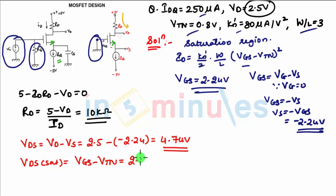Now we can find VDS sat. VDS sat is VGS minus VTN. VGS is 2.24 and VTN is 0.8, that is 1.44 volts. From these two equations, your VDS is greater than VDS sat. That means the transistor which we have assumed in the saturation region is right, and whatever value of RD we have got is right.